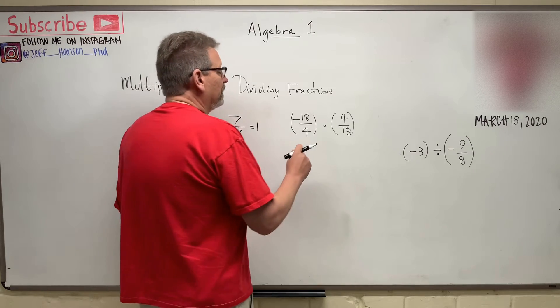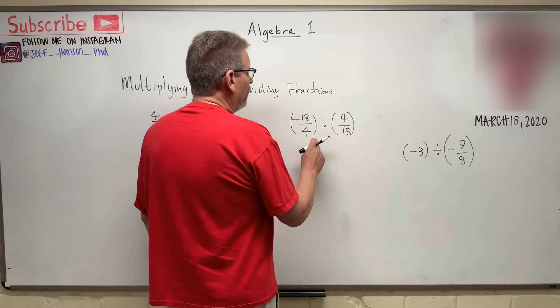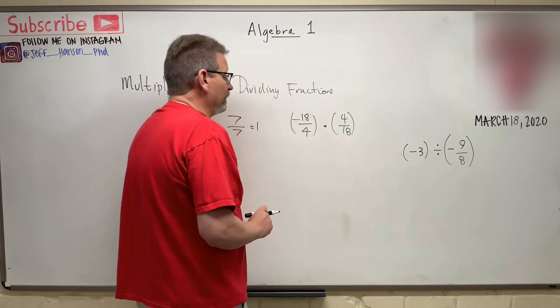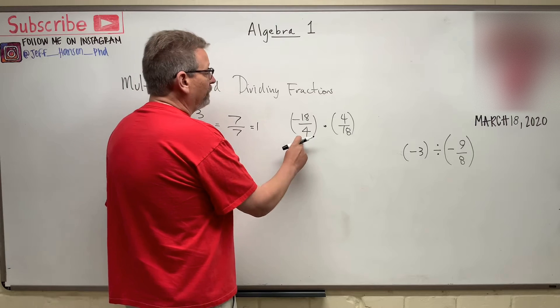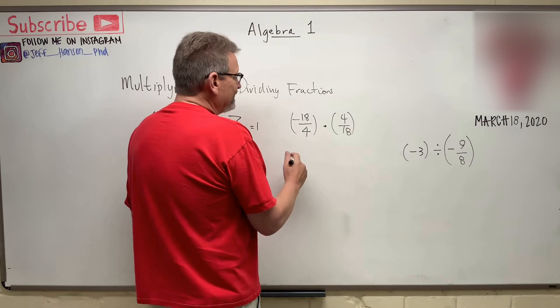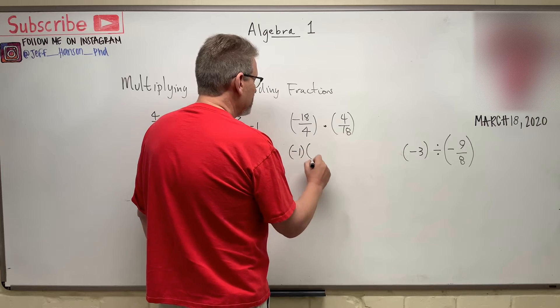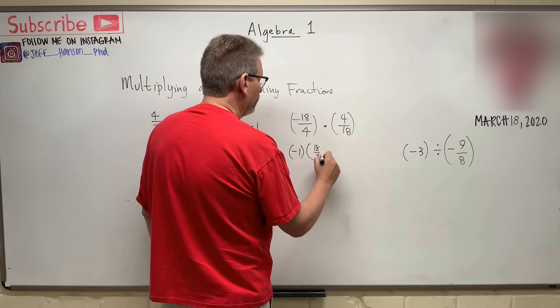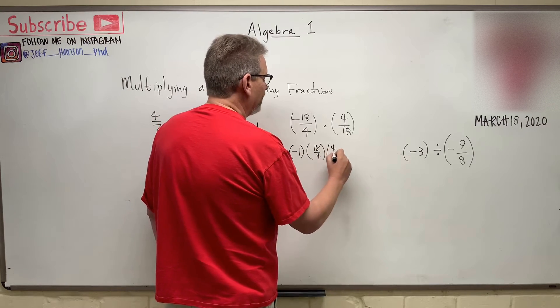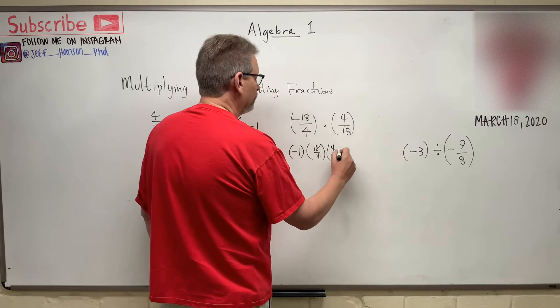Or, I'm sorry, dividing. So in this particular case here, I want to do something different. Negative 18 over 4 is just the same as negative 1 times 18 over 4 and then multiplying that by 4 over 18.